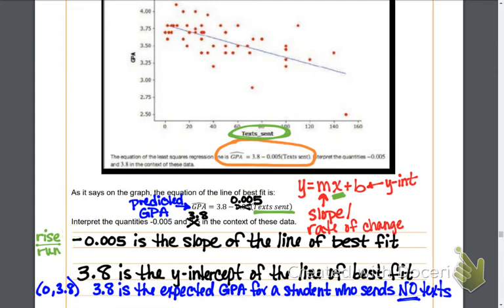what we're going to expect to see is a decrease in the GPA for students who send more text messages. Specifically, we're going to expect to see a decrease of 0.005 in their GPA for each text message sent.